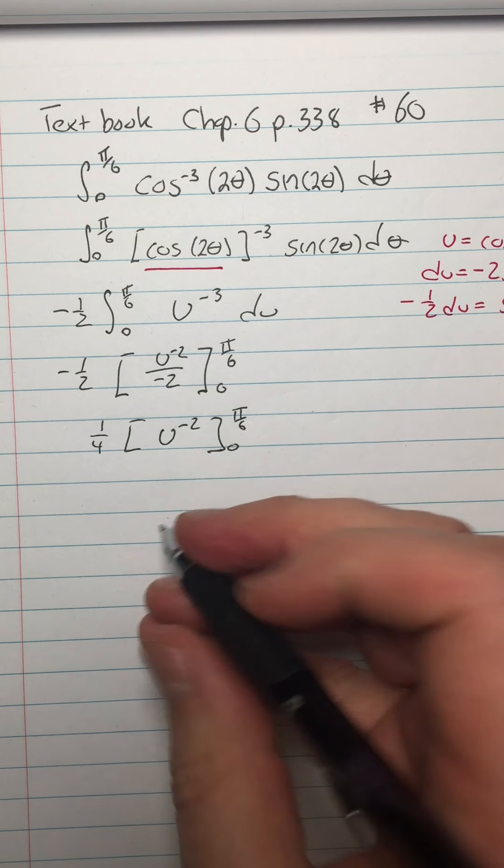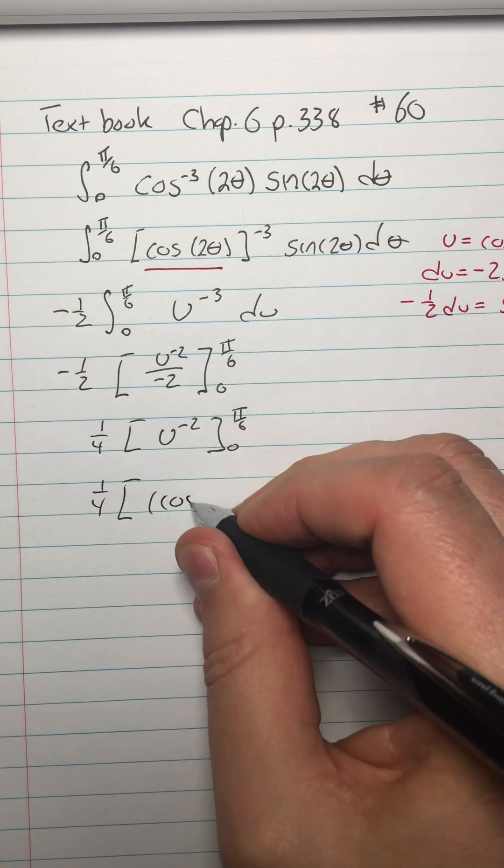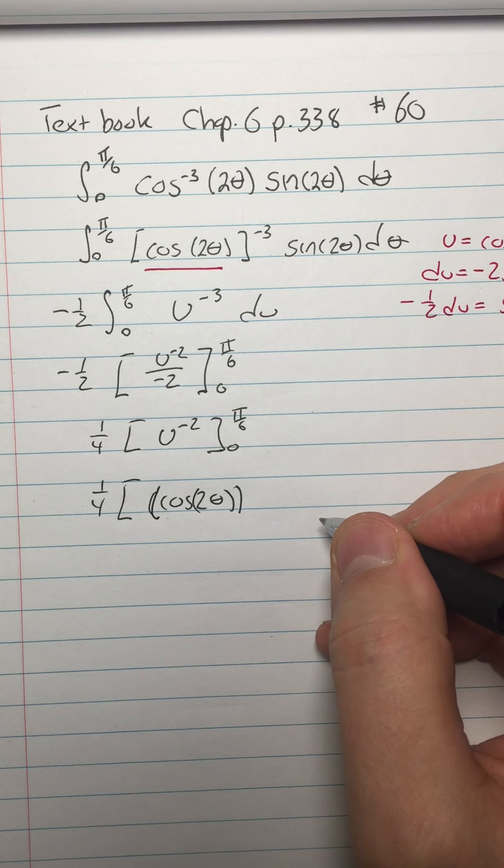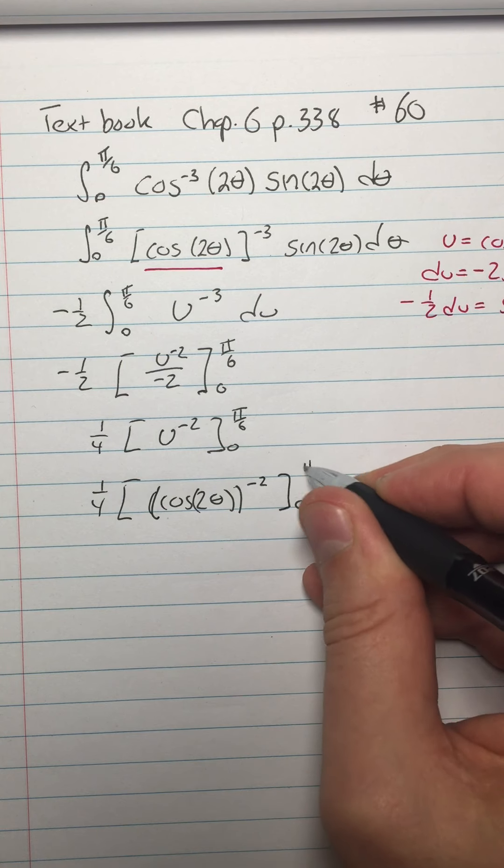But now I'll just put the u back in, and I'll have one-fourth of cosine of 2 theta to the negative 2 power from 0 to pi over 6.